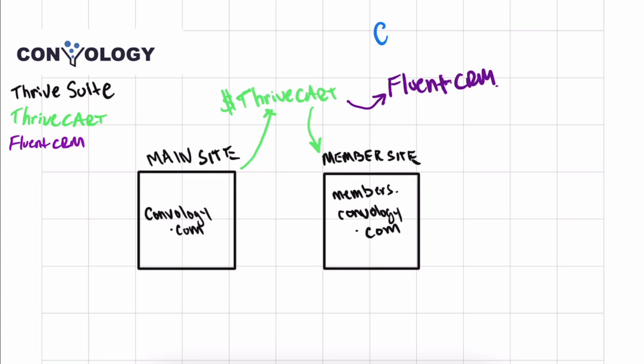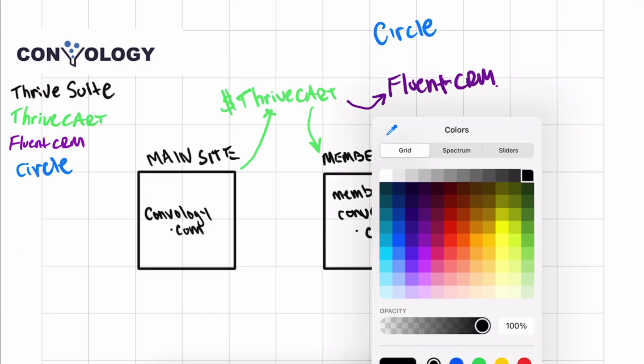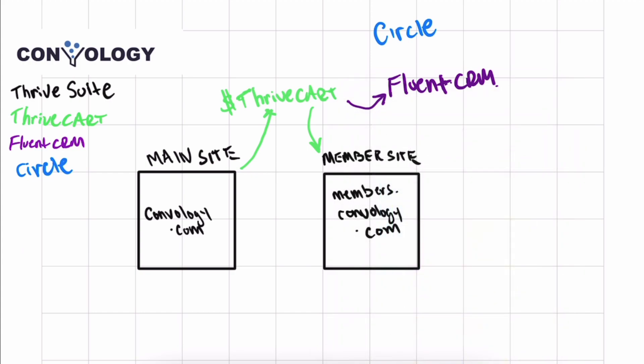Part of my offering in my membership is access to a members-only community. For that, I use a tool called Circle. Circle is notified that somebody needs to get access when they purchase my membership. Now it's a little bit tricky to do this. In order to do this, Circle has integrated with Zapier. Basically what's happening is ThriveCart says, hey Zapier, someone purchased the product that needs to be purchased. And Zapier says, okay, we're going to give them access to the members-only area in Circle.